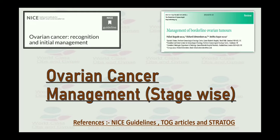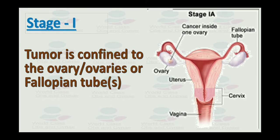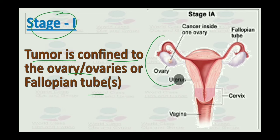The stage-wise management of ovarian cancer. Ovarian cancer presents in different stages, and we need to understand not only the stages but also what we have to do at different stages. In stage 1, the tumor is basically confined to the ovary or ovaries or fallopian tube — it doesn't go beyond the ovaries.